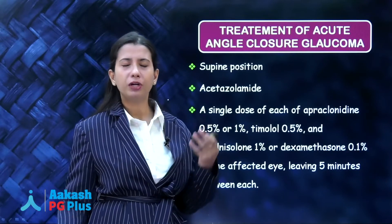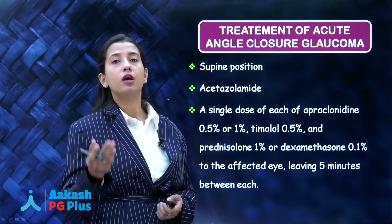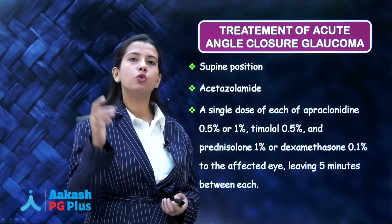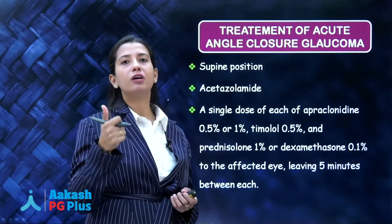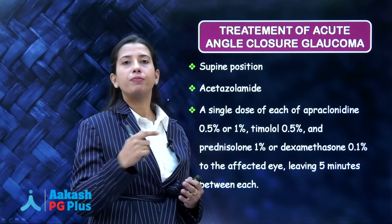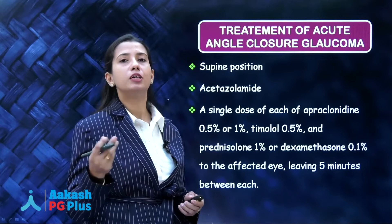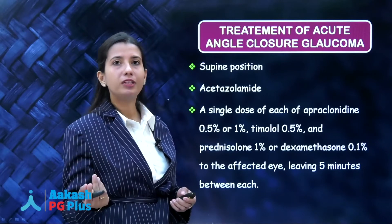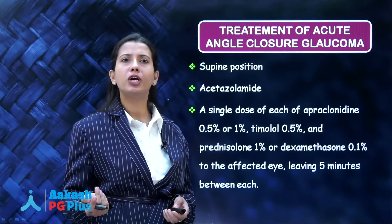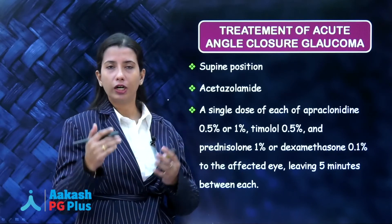This is an ocular emergency — the patient is in severe pain and cannot see. First, we ask the patient to lie down so the iris falls back due to gravity. Second, we lower the pressure to relieve pain and save the optic nerve from damage. We give acetazolamide (Diamox) 250 mg four times a day, along with beta blockers and alpha-2 adrenergic agonists, which are aqueous suppressants that suppress aqueous humor formation. Since aqueous is not draining, stopping its production will reduce IOP.